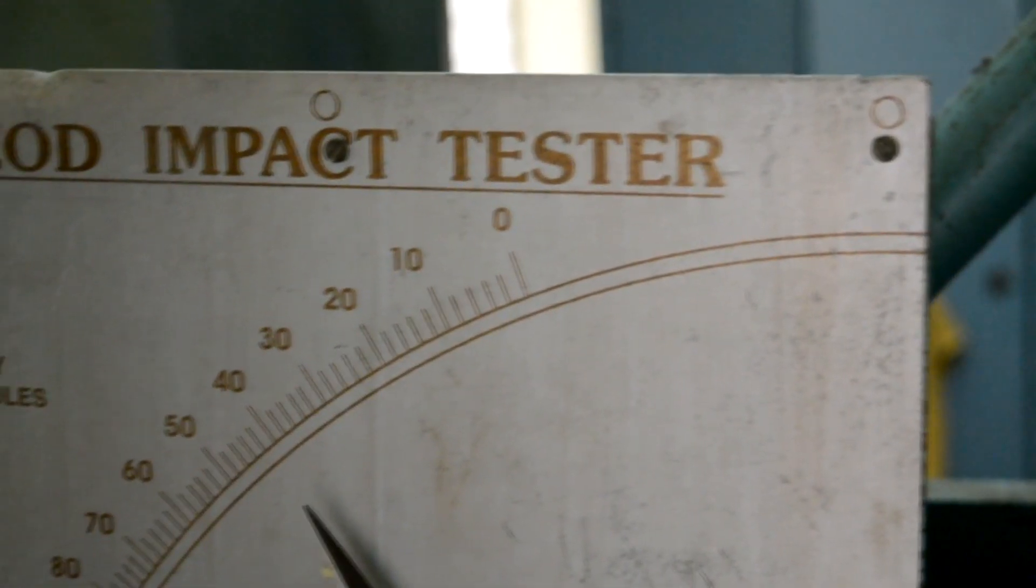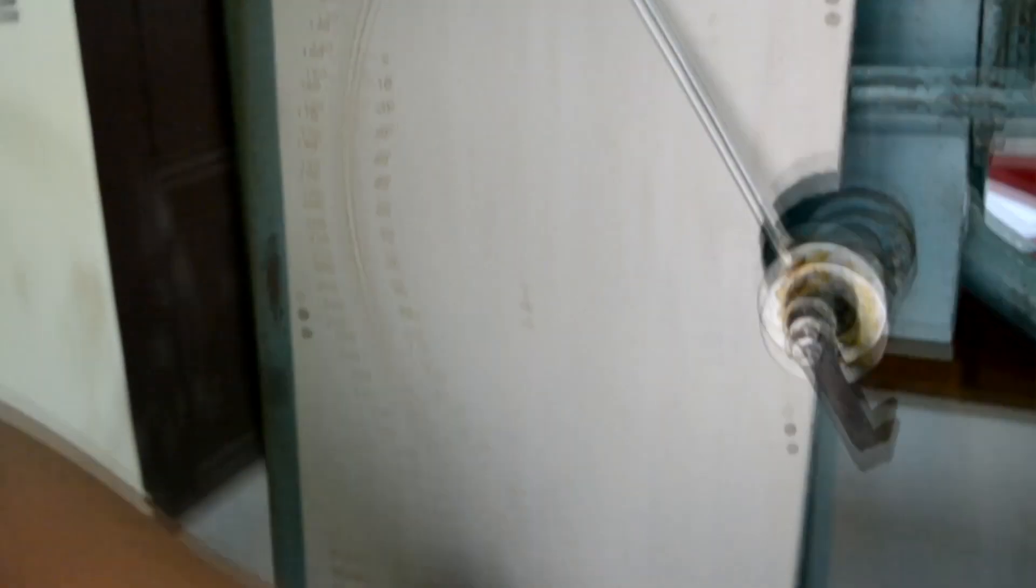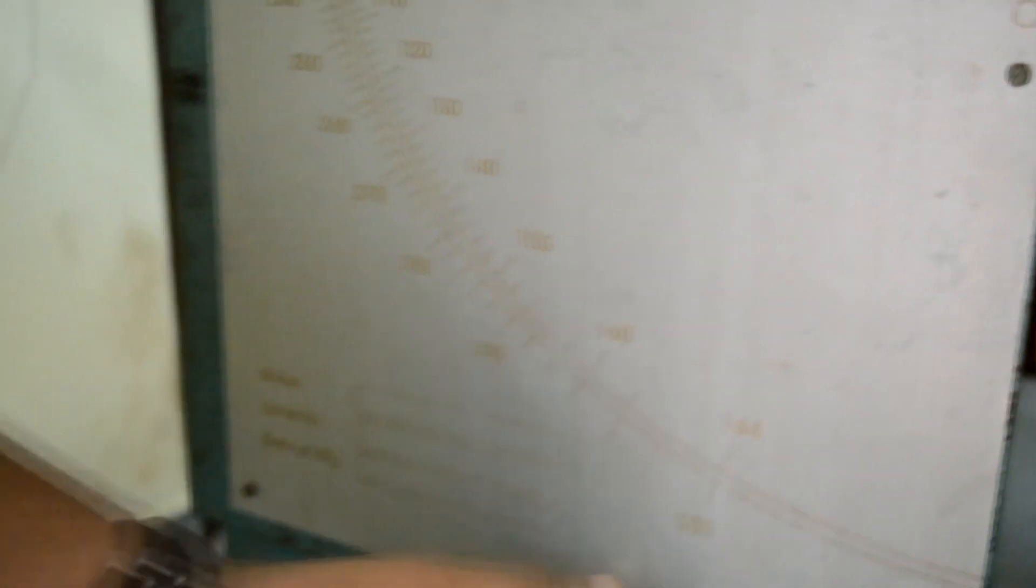For Charpy impact test, we can see that the maximum energy is 300 joules which can be absorbed by the specimen. And in Izod impact test, 164 joules is the maximum energy that can be absorbed.